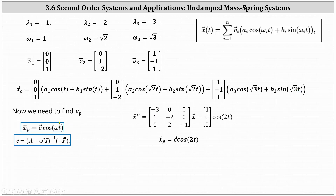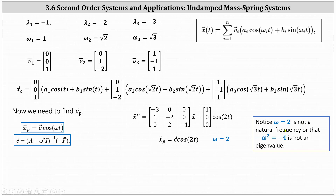The next step is to determine a particular solution x sub p for the original non-homogeneous system, using the formula x sub p equals c times cosine omega t. Looking at our equation, omega equals two, giving x sub p equals c times cosine two t. Note that omega equals two is not a natural frequency — it is not equal to omega one, omega two, or omega three — and negative omega squared equals negative four is not an eigenvalue of A, so this form works for x sub p.